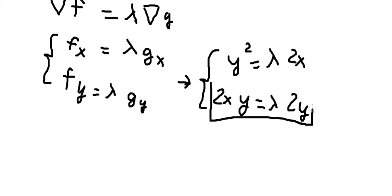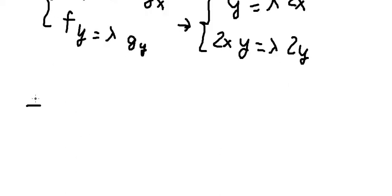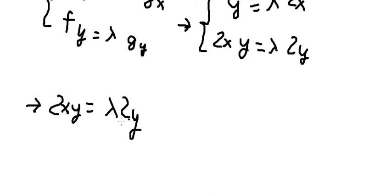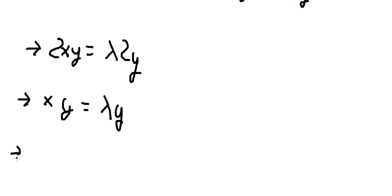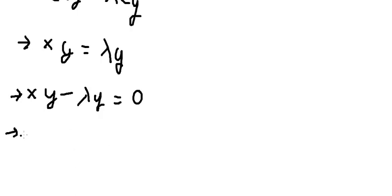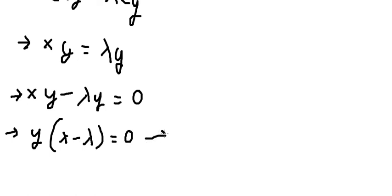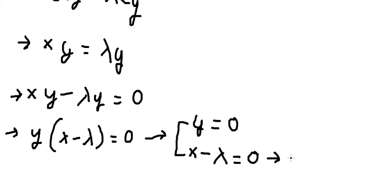Now I will consider this equation. We divide both sides by 2 and move terms to the left side. We can then do factorization. In this situation we get y equals 0 and x minus lambda equals 0, so x equals lambda.